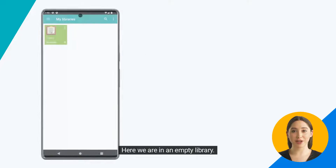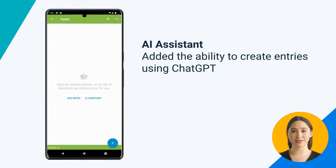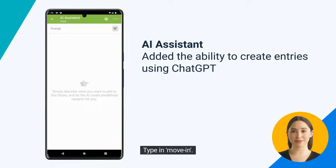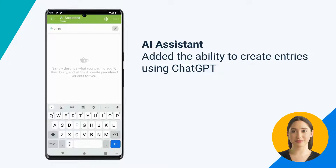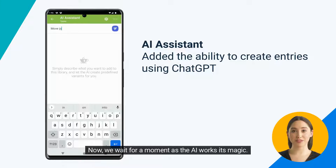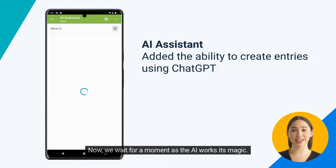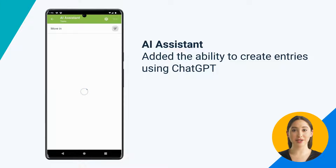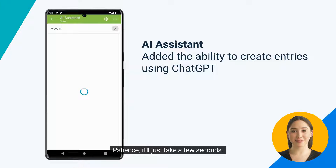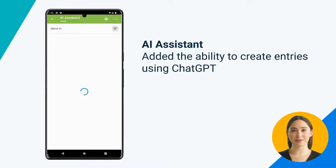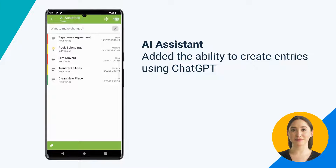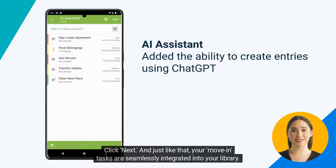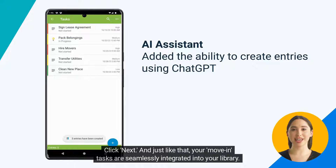Here we are in an empty library. Now let's give the AI a task — type in "move in." Now we wait for a moment as the AI works its magic. Patience, it'll just take a few seconds. Impressive, right? Click Next, and just like that your move-in tasks are seamlessly integrated into your library.